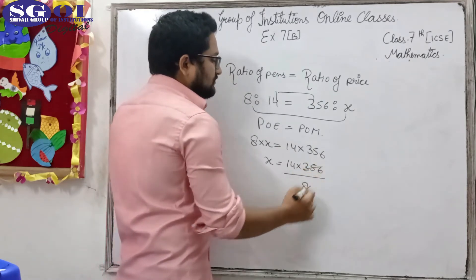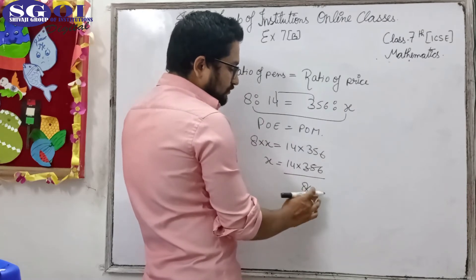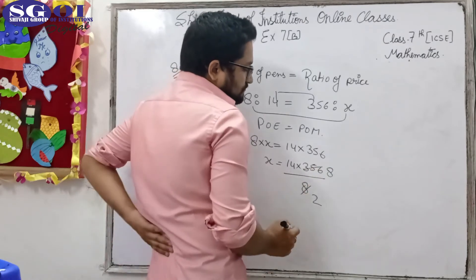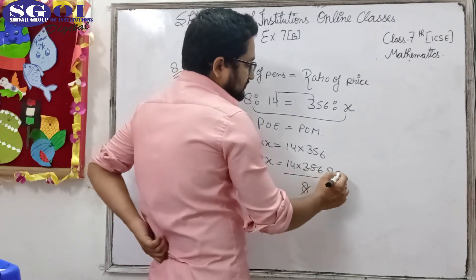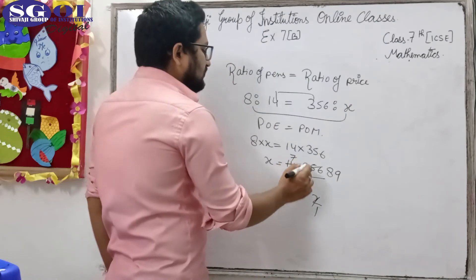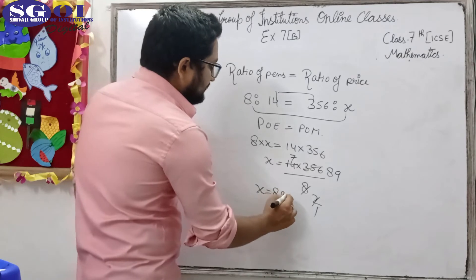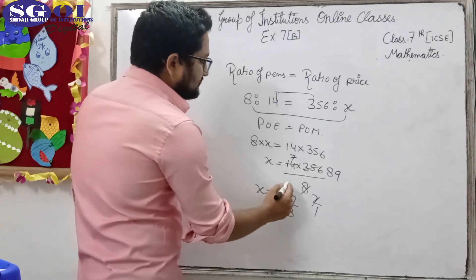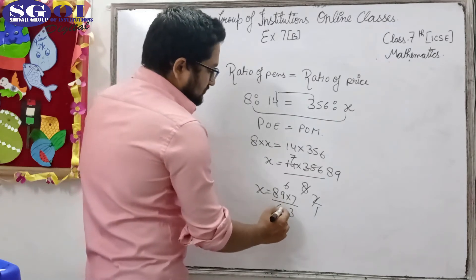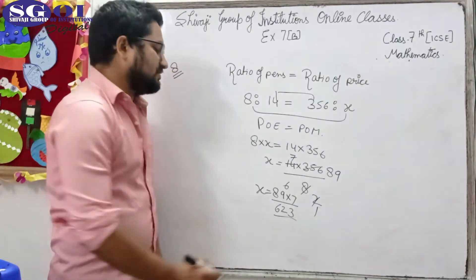So x equals 14 multiplied by 356 upon 8. Dividing 8 and 14 by 2 gives 4 and 7. Then 356 divided by 4 equals 89. So x equals 89 multiplied by 7. Computing: 7 × 9 = 63, carry 6; 7 × 8 = 56 plus 6 equals 62. Therefore x equals 623 rupees.